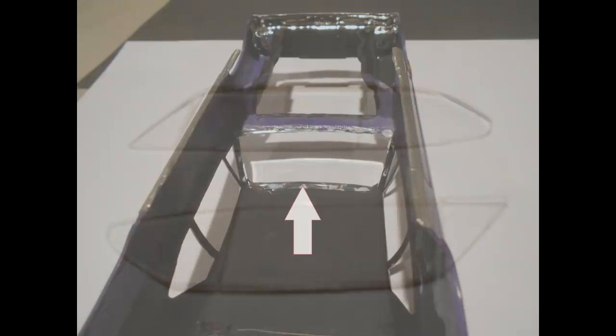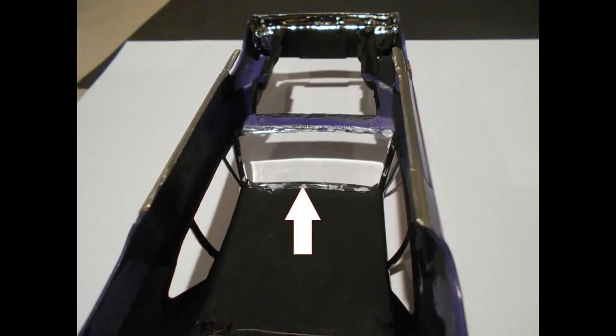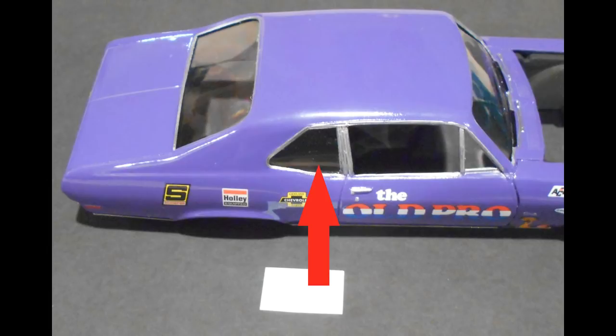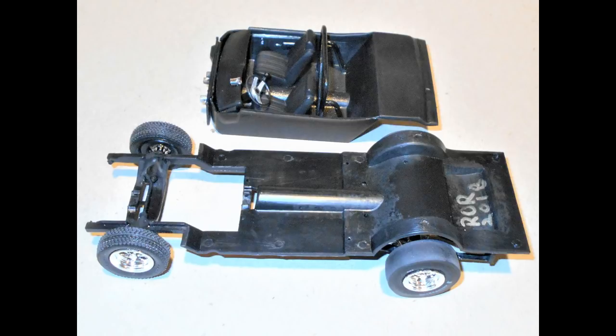Glue all of the windows into place using some white glue or some crystal clear product. There are also some racetrack decals available for that rear quarter window. Look for the glue points where the interior tub meets the chassis and go ahead and glue the interior tub into position.